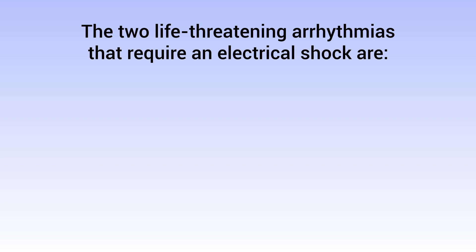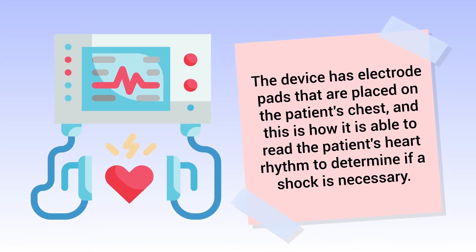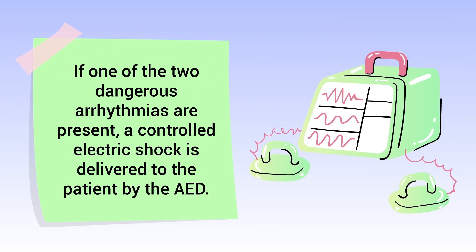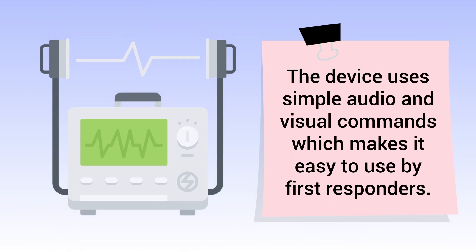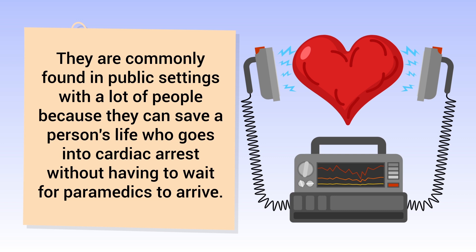The two life-threatening arrhythmias that require an electrical shock are ventricular fibrillation and pulseless ventricular tachycardia. The device has electrode pads that are placed on the patient's chest, allowing it to read the heart rhythm and determine if a shock is necessary. If one of the two dangerous arrhythmias is present, a controlled electric shock is delivered. The device uses simple audio and visual commands, making it easy to use by first responders.